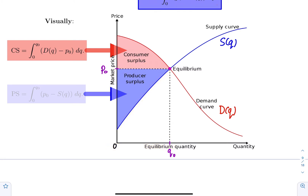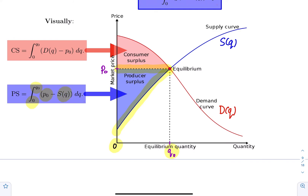The integral from 0 to Q0 of the upper curve P0 minus the lower curve S(Q), the supply curve, dQ, is going to compute the producer's surplus.